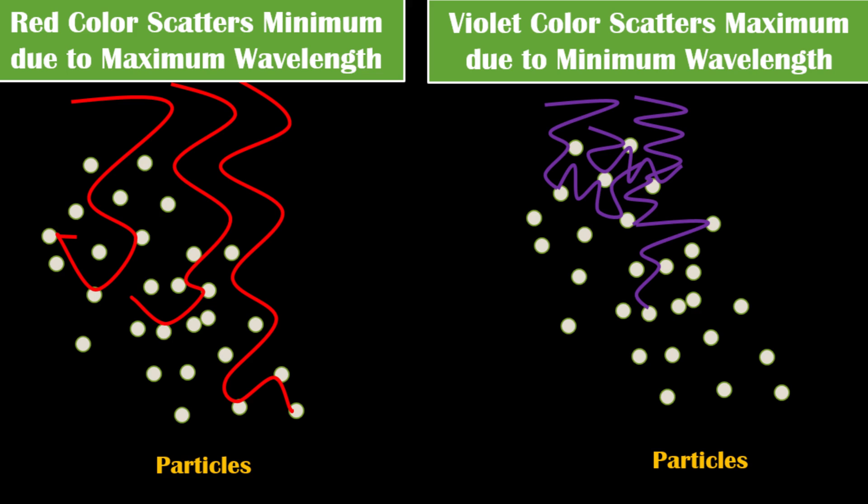As the wavelength of light increases, the scattering decreases. Because of this reason, red color present in the sunlight scatters least, while the violet color scatters most.